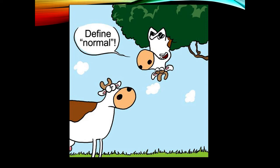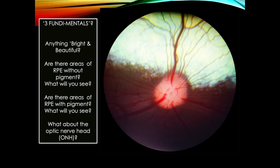Now we've defined normal, let's do some participation. First question: is there anything bright and beautiful on that screen? Yes, we've got tapetum. So straight away — how much pigment in the RPE overlying it? None — perfect. Dead easy. Are there areas of RPE without pigment? Yes — you see the tapetum.